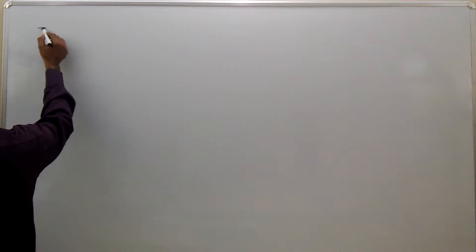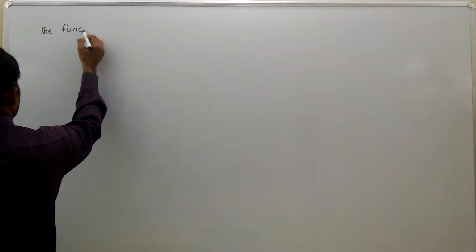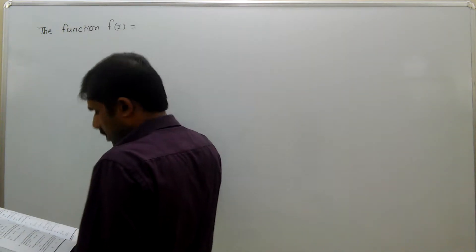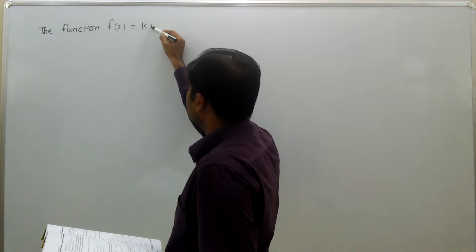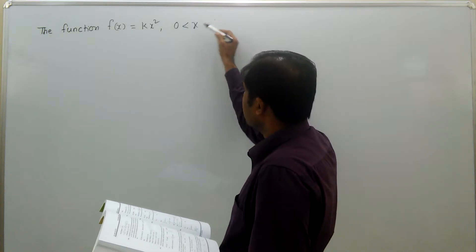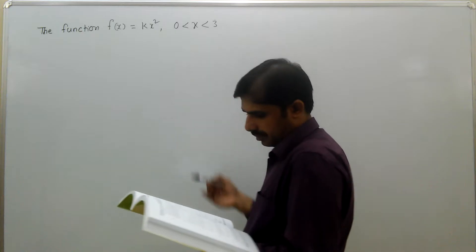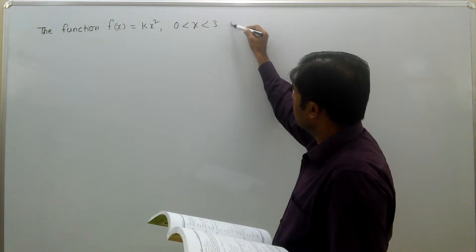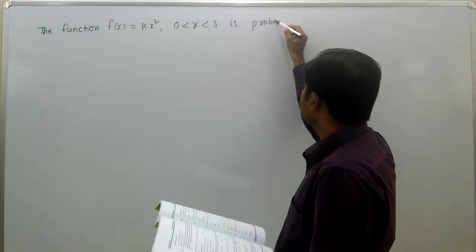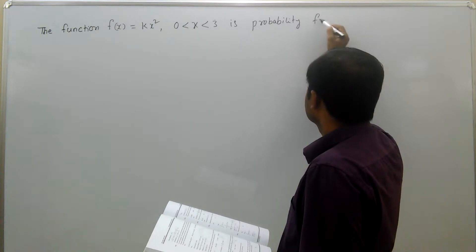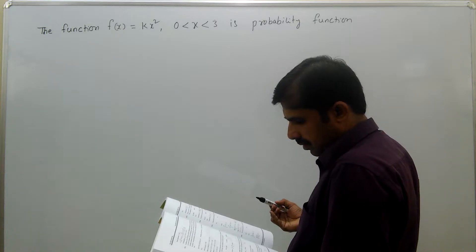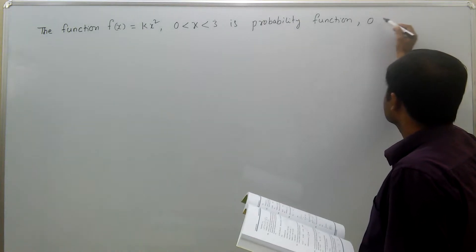The function f(x) = kx², 0 < x < 3, is a probability function, 0 otherwise.